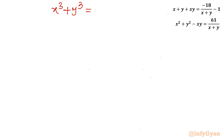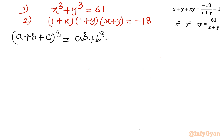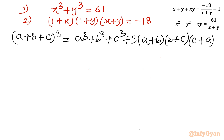Now I will use one very powerful algebraic identity. The formula is a plus b plus c whole cubed equals a cubed plus b cubed plus c cubed plus 3 times a plus b, times b plus c, times c plus a. I will now use substitution: let a equal x, b equal y, c equal 1.